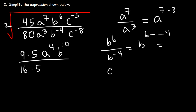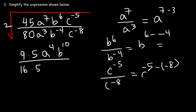And then c to the negative 5 divided by c to the negative 8: negative 5 minus negative 8 is the same as negative 5 plus 8, so this is going to be c to the 3rd power.